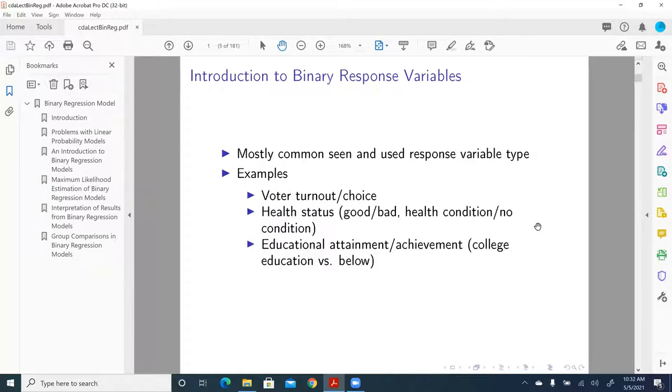For educational attainment and achievement, sometimes we can encode such data as binary variables. For example, having college education versus below, having college education and above versus below, having high school education and beyond, or having less than high school education. So all these variables can be coded as binary.